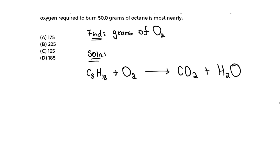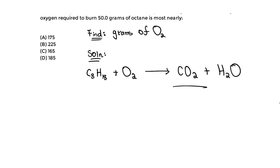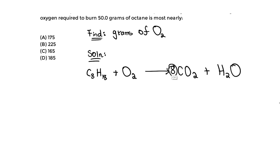Now let's balance this equation. First, we focus on carbon. On the left side we have 8 carbons, and on the right side we only have one in CO2. So we simply place an 8 in front of CO2, and now we have 8 carbons on both sides — carbon is balanced.